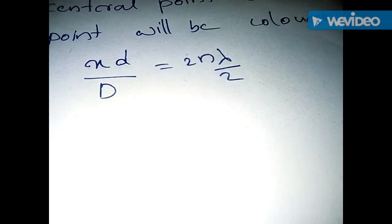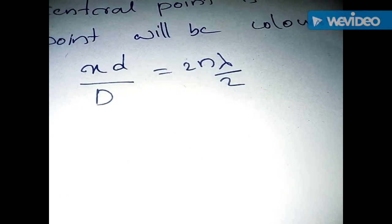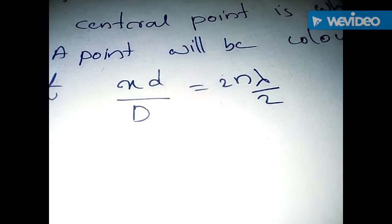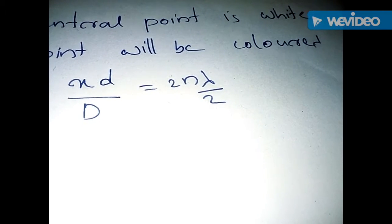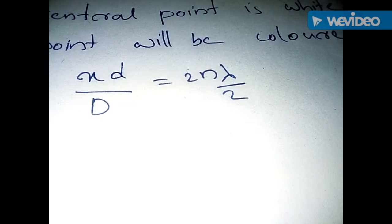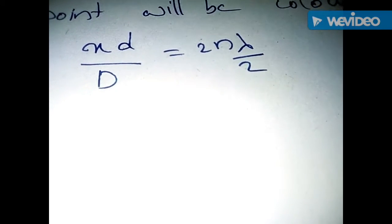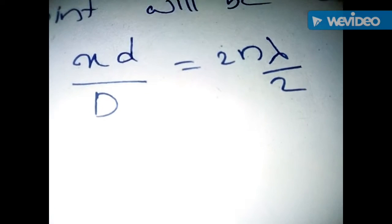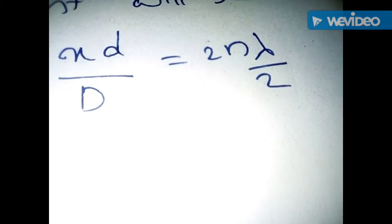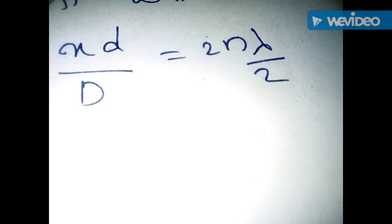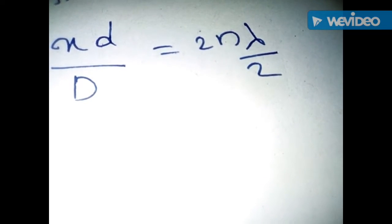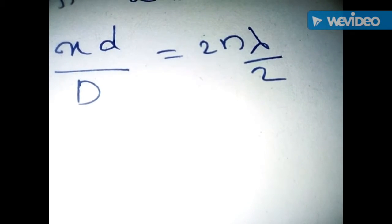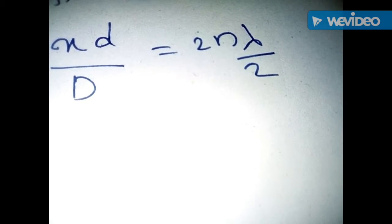A point will be bright only when xd divided by D equals 2n lambda divided by 2.